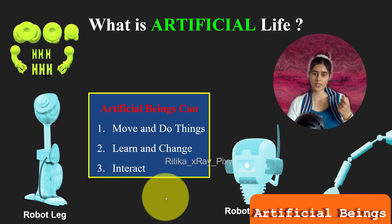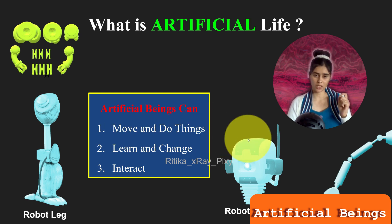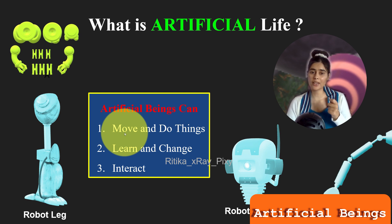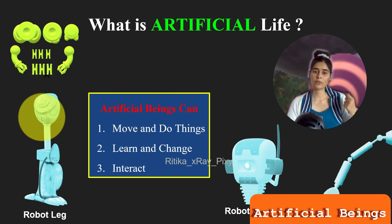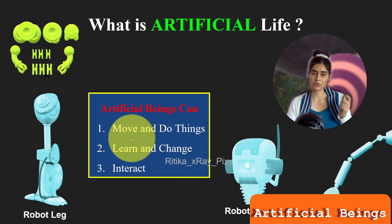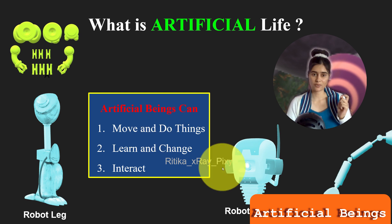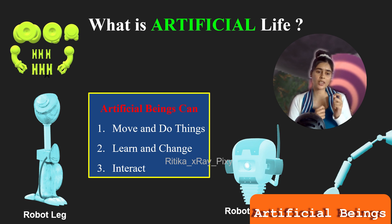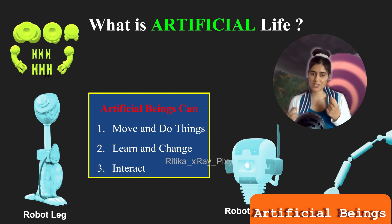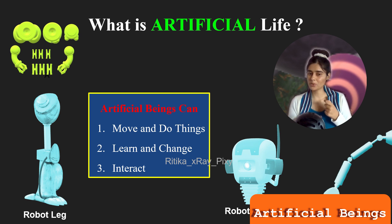There are three key points about how artificial beings behave. First, artificial beings can move and do things — they behave like real living beings by following rules and instructions that make them move and do things. By following simple rules, they can move around, do tasks, and make choices. Second, artificial beings can learn and change. They can learn from their experiences and adapt to new situations, just like we learn from our mistakes and improve.